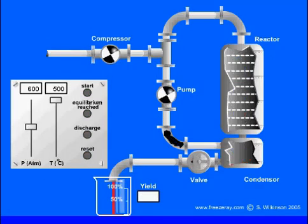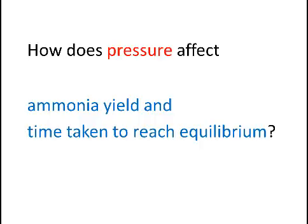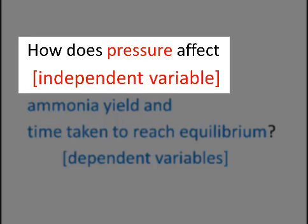Here we have an investigation where the focus question is: how does pressure affect ammonia yield and time taken to reach equilibrium? So we have an independent variable, pressure,